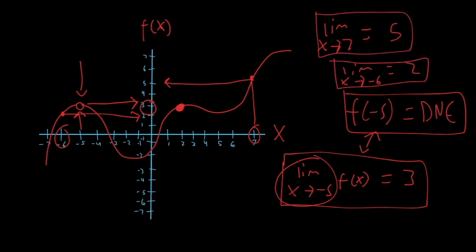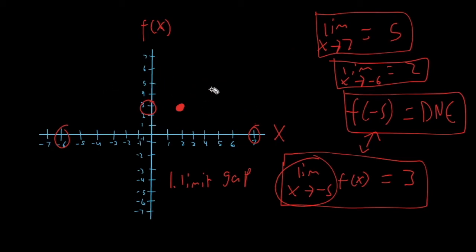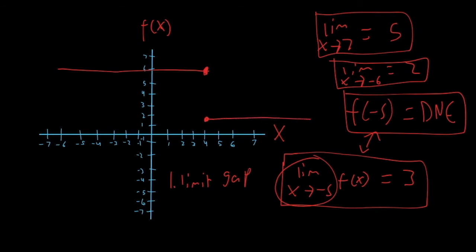However, there are a few cases where you can't have limits — three main cases. The first one is if the limit has a gap. For example, if there are two separate function pieces where one goes one way and another goes a different way, and I ask you to find the limit as x approaches four — it wouldn't exist because there's a gap. It could be positive six or it could be 1.5, and since we don't know, that value does not exist.